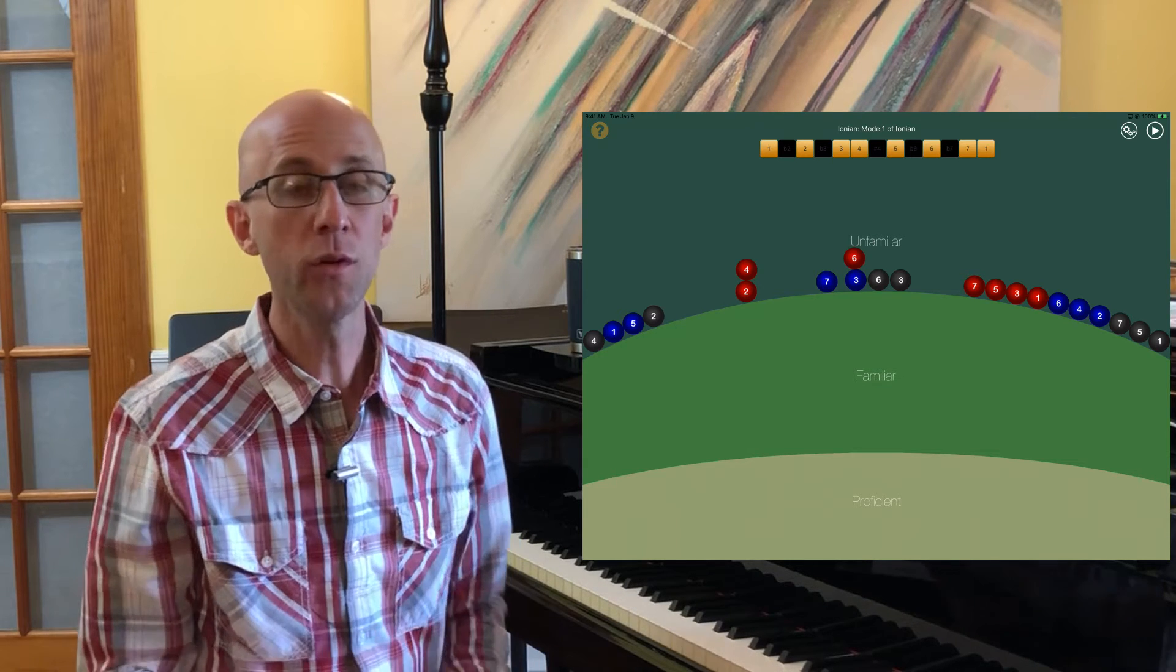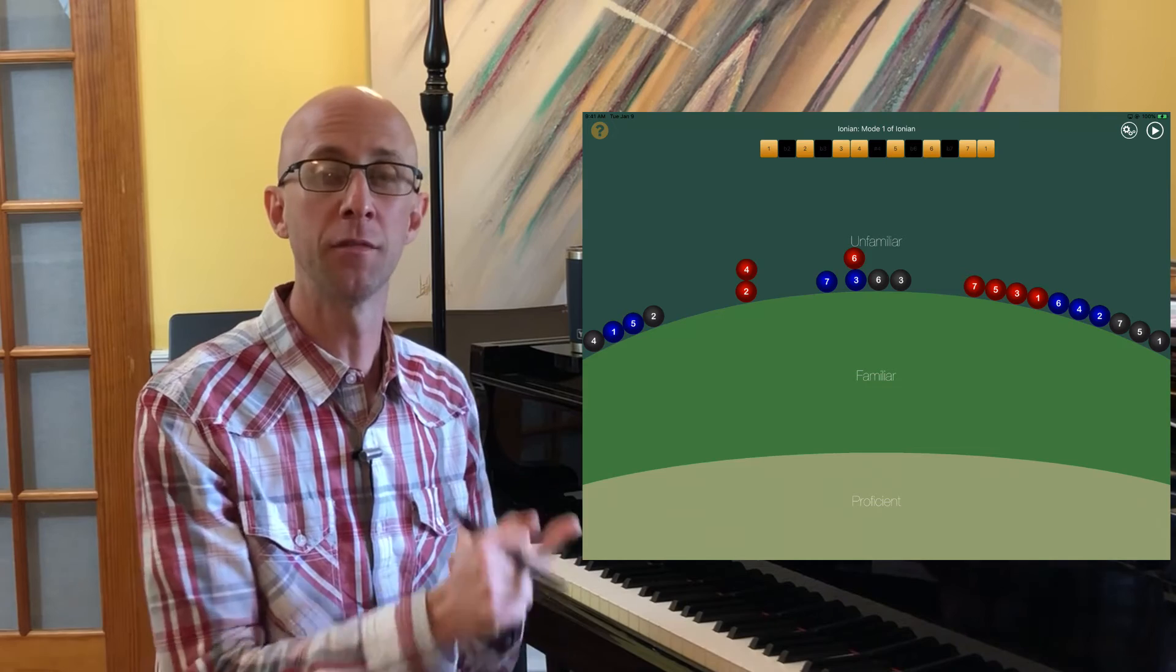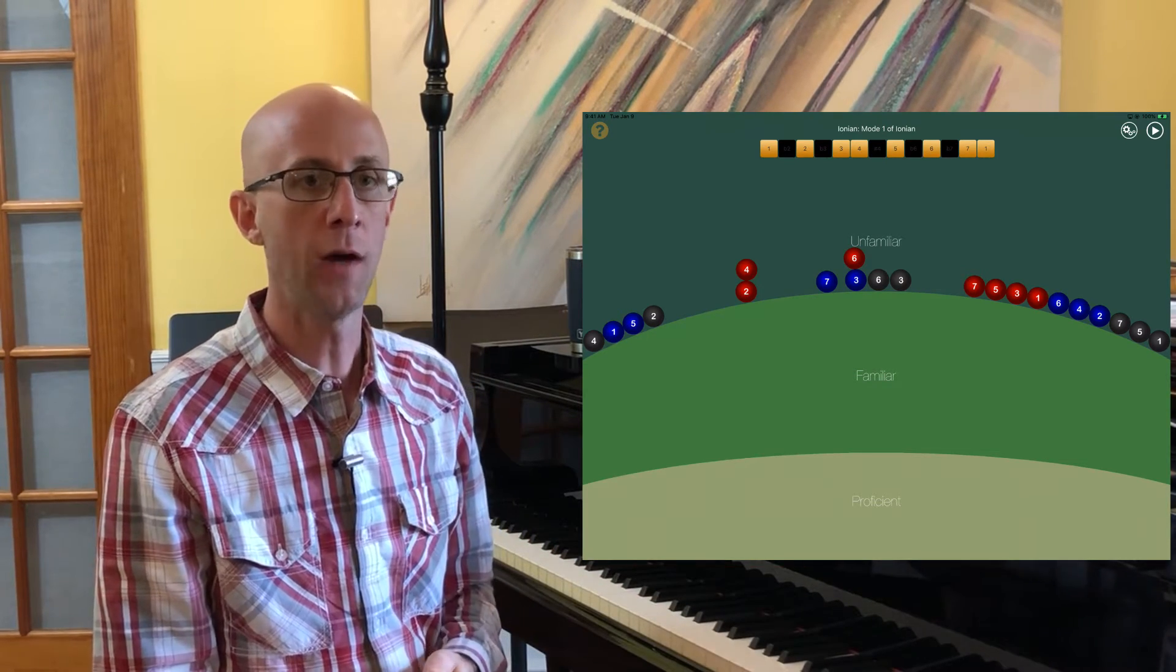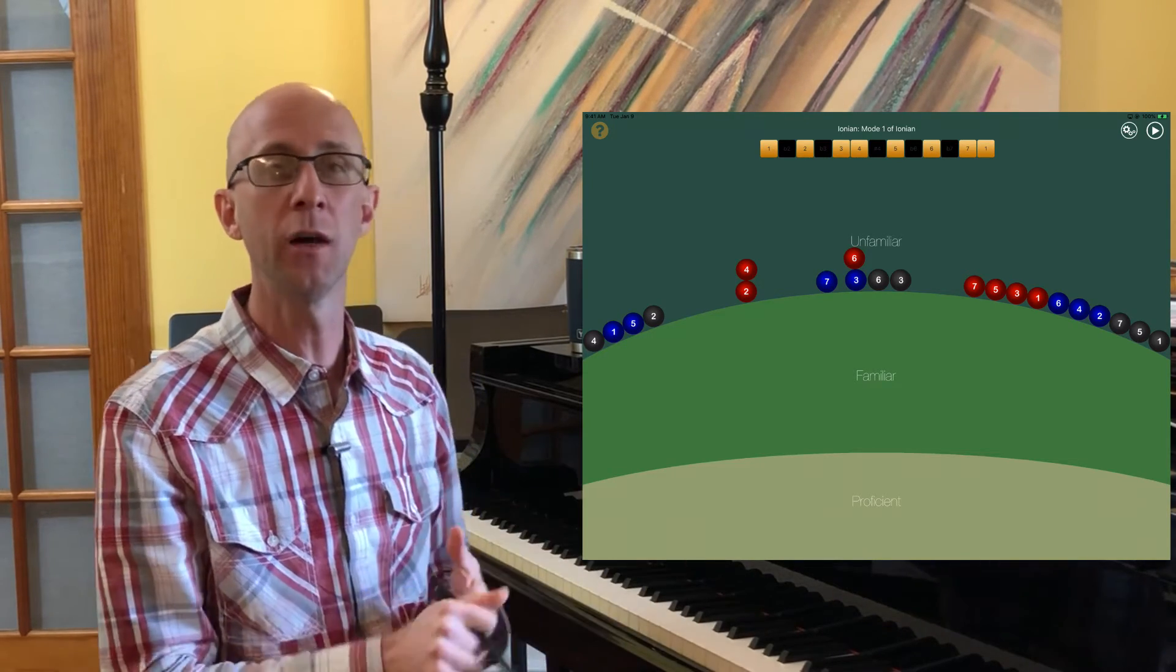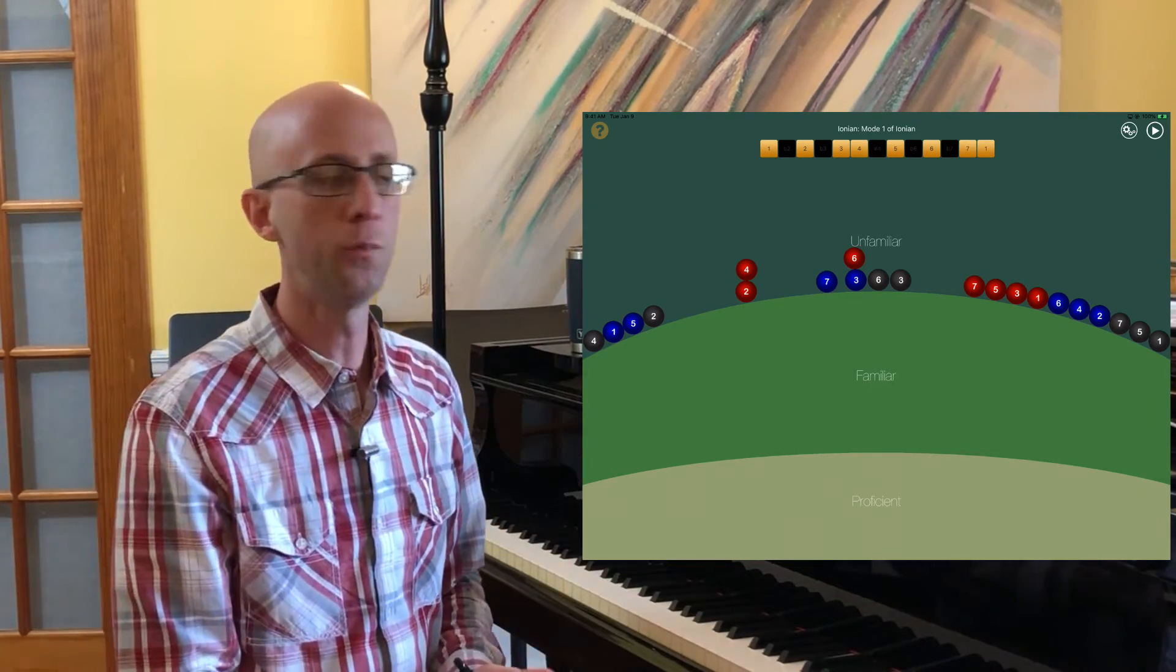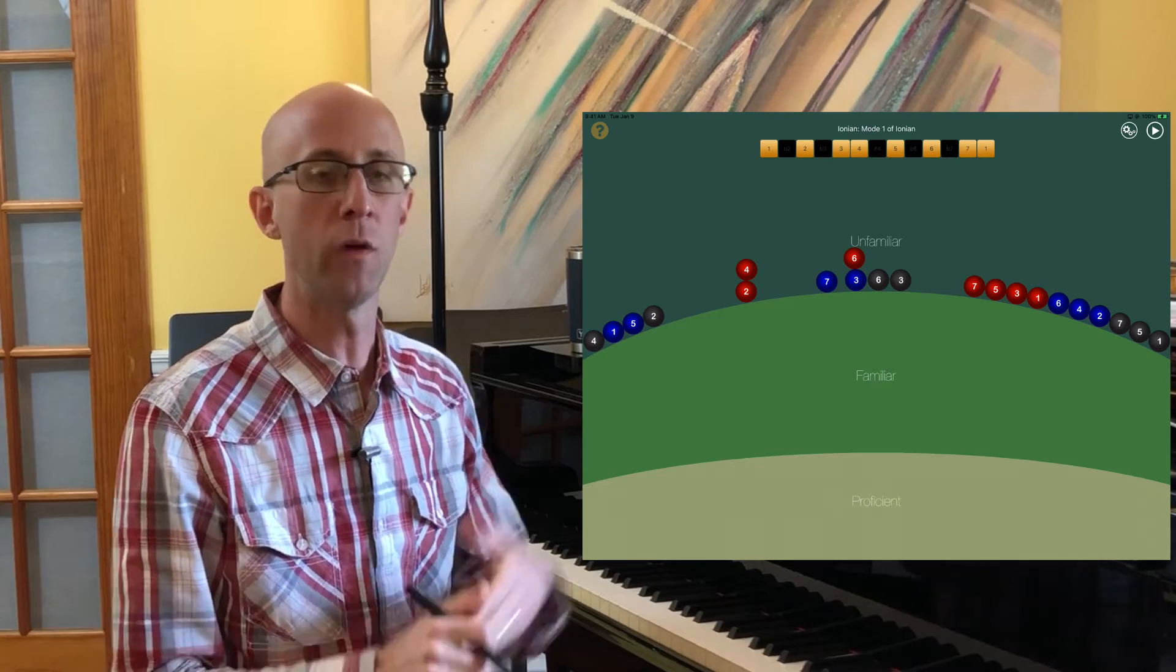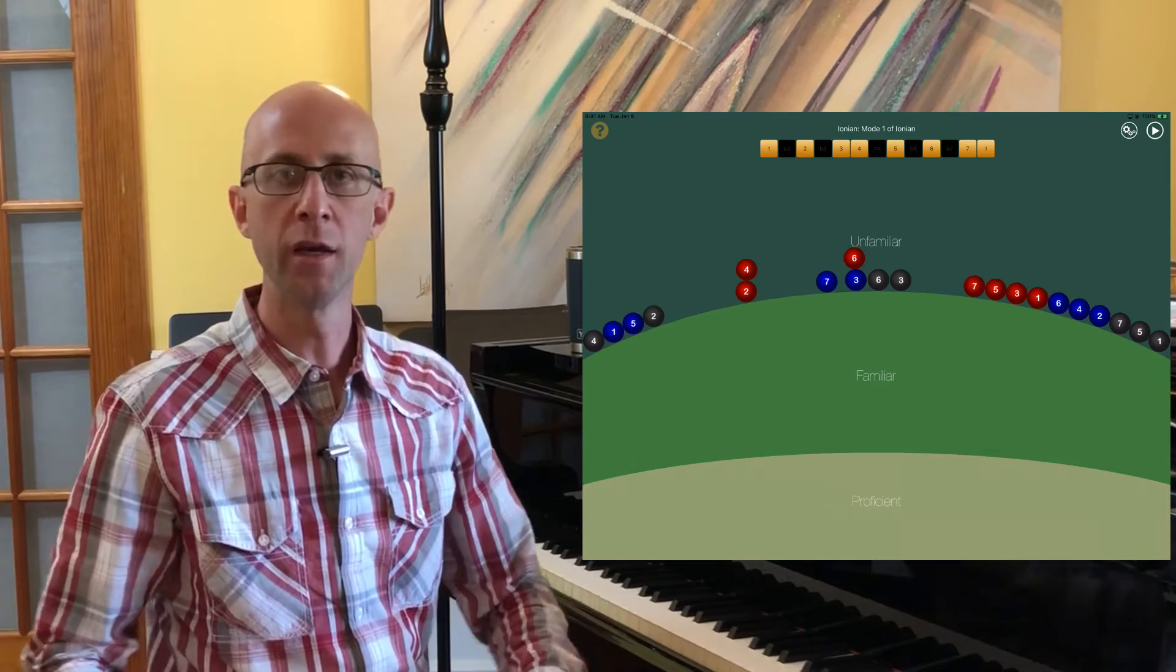As with Polytonus 2, Polytonus 3 is going to use this reverse ear training effect where rather than hear something and name it, you have to produce what it asks for. So give me this or make this sound what I want it to sound like, not name what you're hearing. This is going to use machine learning to pinpoint the things you need to work on and more or less leave alone the stuff it recognizes that you're proficient in. It will also decide when you're ready to level up.